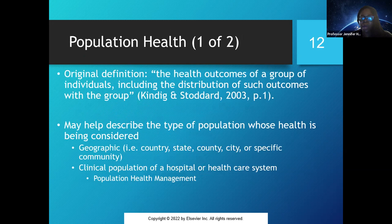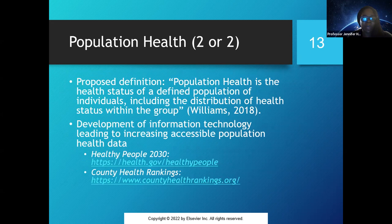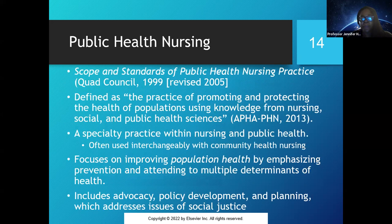A population-focused approach involves planning, delivering, and evaluating interventions to achieve better outcomes for the population you serve. Population health is the health status of a defined population — for example, Native Americans. We use Healthy People 2030 objectives to help carry out these goals. Focus on box 1.4, which lists the principles on which public health nursing is built, and make sure you have an understanding of that as well.